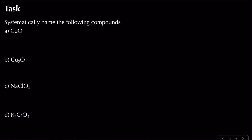Now some examples for you to try. Starting with CuO: oxygen is minus two, overall oxidation state is zero, so copper must be plus two. That gives copper(II) oxide.